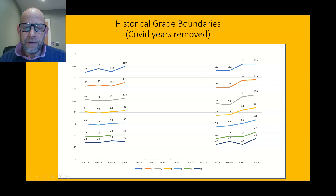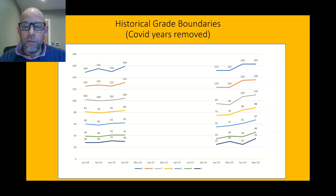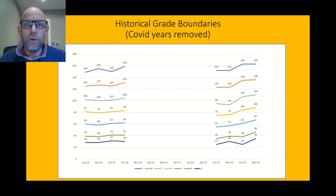Looking at the graph now, I'm thinking I should have also deleted June 2023 and November 2023, because the bottom line is that when it comes to your exams in summer 2025, I suspect the grade boundaries will look very like June 2024 and November 2024.